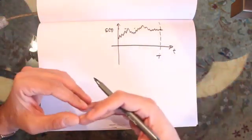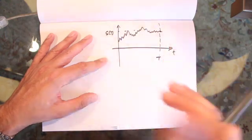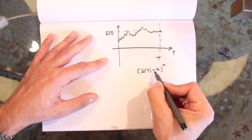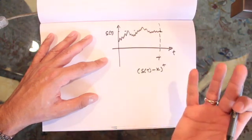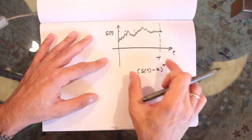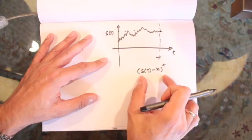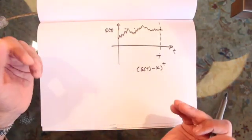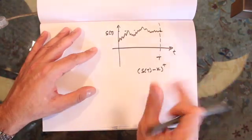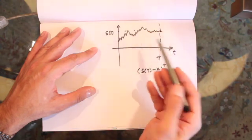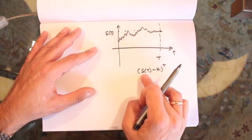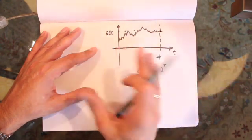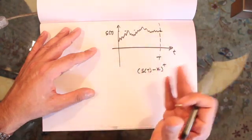From our discussion on European call options, if this were a European call option, the payoff would be the maximum of S(T) minus K and zero, where K is our fixed strike price. So we fix the strike price, and depending on how the stock ends up, the payoff is given by max(S(T) - K, 0). As we discussed earlier, European call options are not path dependent — all that matters is the value of the stock at expiration.